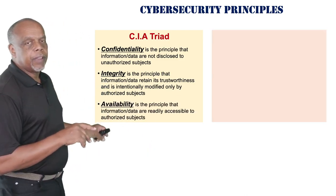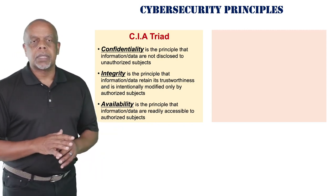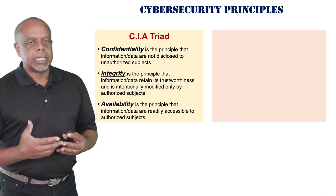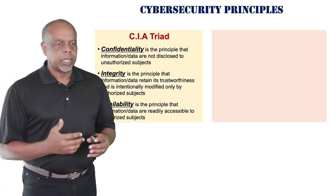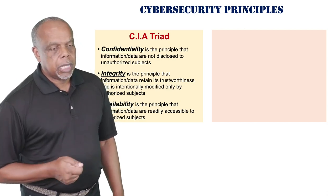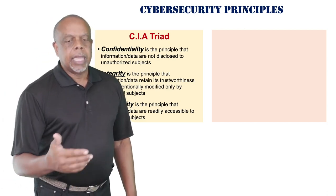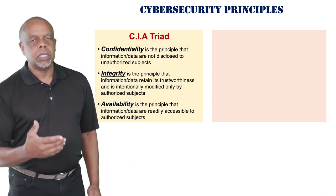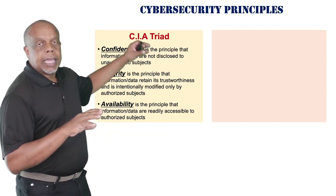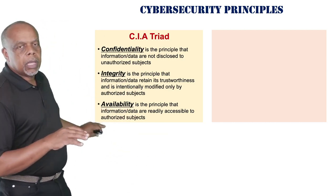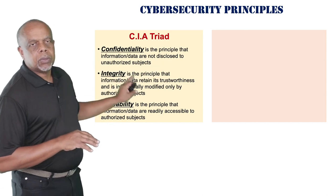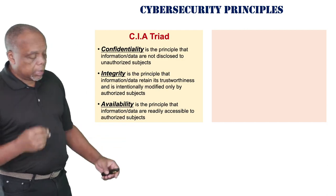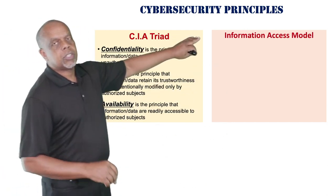Availability is the concept that your information is available when you need it — data is readily accessible. Again, the banking industry is concerned about this. You go to an ATM, pop in your card, and it says the ATM is out of service — that's an availability issue. You can't get to your money when you need it. Pretty much everything else in cybersecurity ties back to one of these three: confidentiality, integrity, or availability.